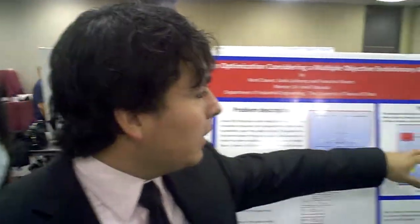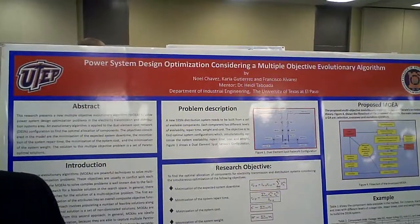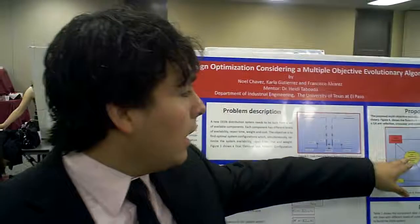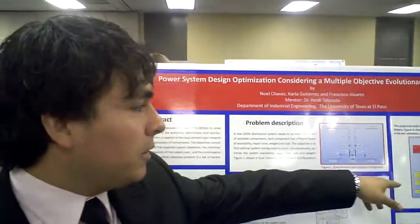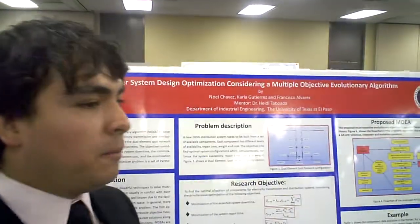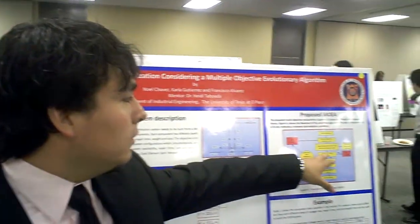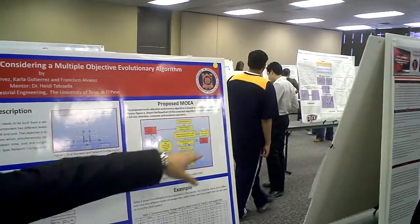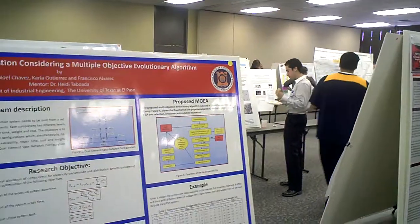Then we're going to apply the parallel dominance and perform the dominance count. When we get to the stopping criteria, we're going to choose the best solutions and eliminate the dominated solutions, because we only want the non-dominated solutions.